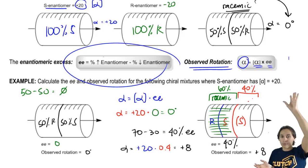Out of the total rotation that I could have, only 40% of that is actually taking place, so it's positive 8.